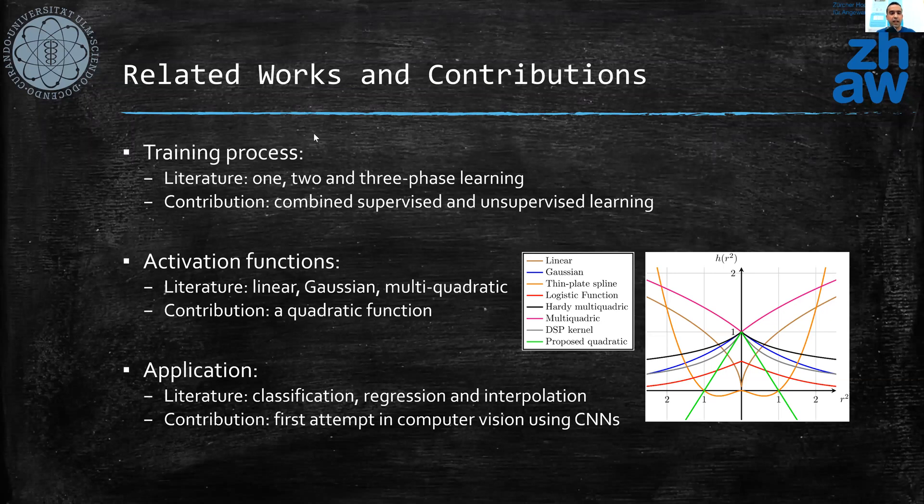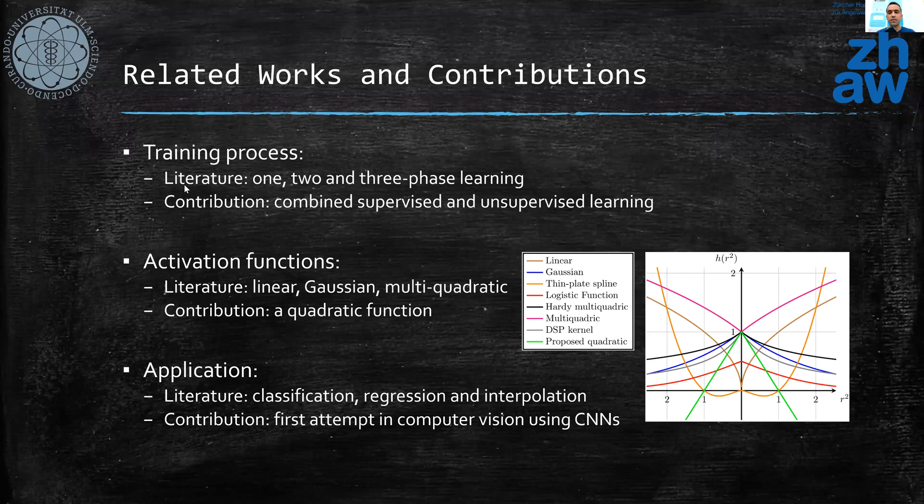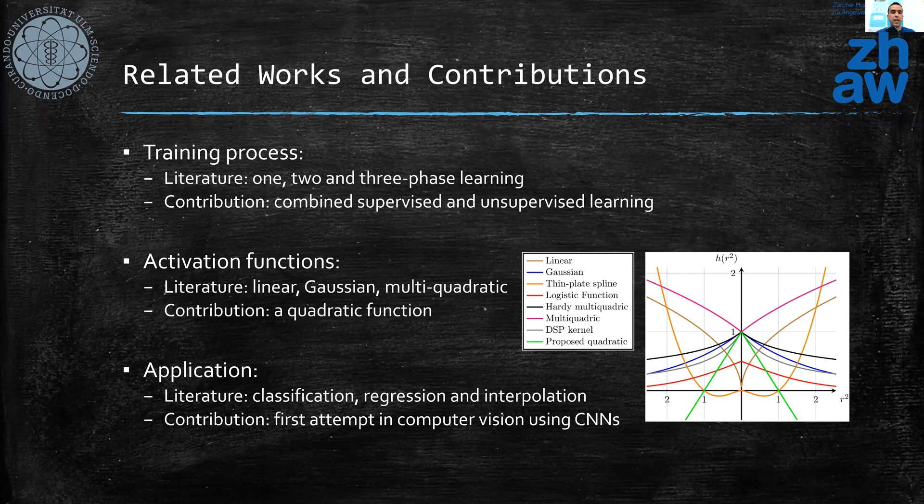The related works related to the RBF networks are divided into three categories. Some works are focusing on the training process. There are different types of training process: one, two, and three phase learning for RBFs. Here we combined two phases of training the RBFs by combining supervised and unsupervised learning. There are several different activation functions proposed in the literature for RBF networks based on different applications, and here we propose a quadratic function so that we can have a completely linear computational graph for efficient gradient flow for CNNs.